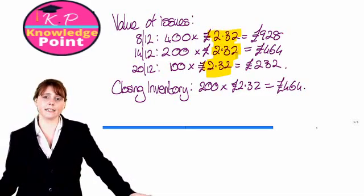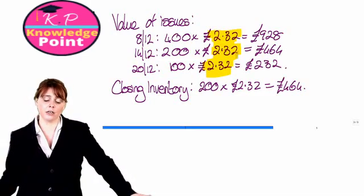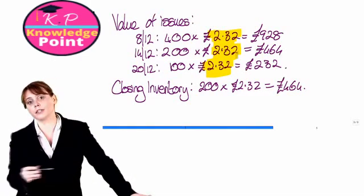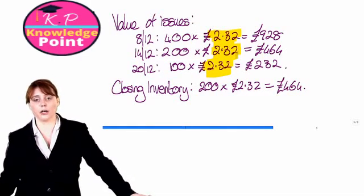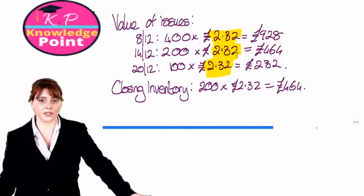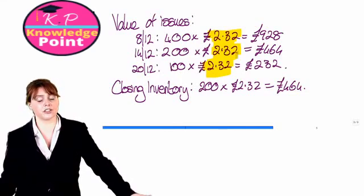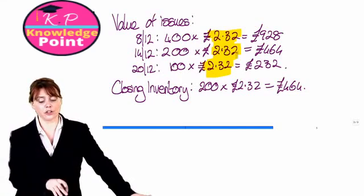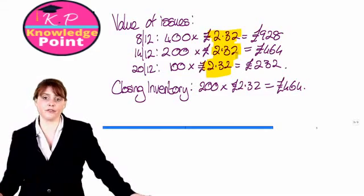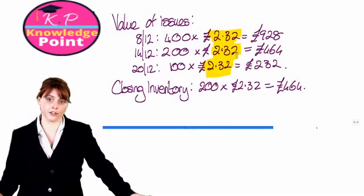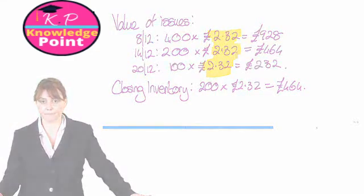The periodic weighted average method is very straightforward and has the advantage of applying the same value to all issues, making it easier to understand. The disadvantage, of course, is that we have to wait until the end of the period to know what the cost of each issue was.